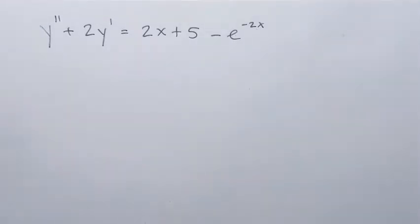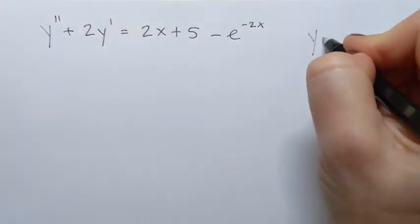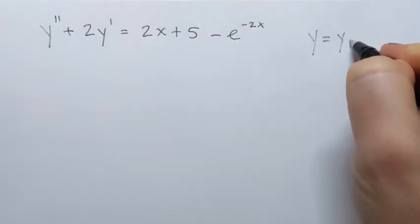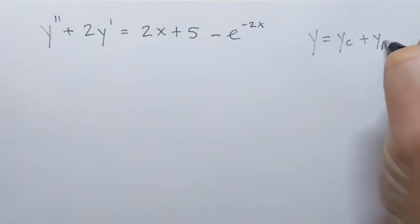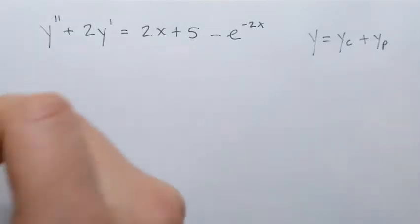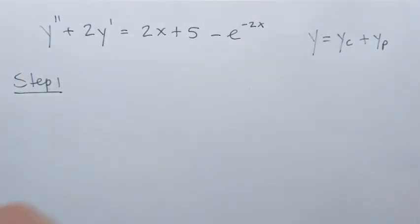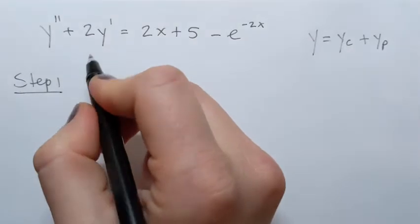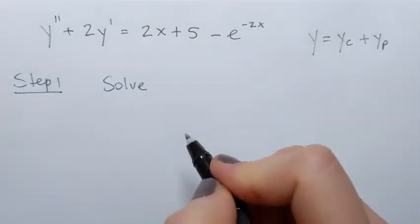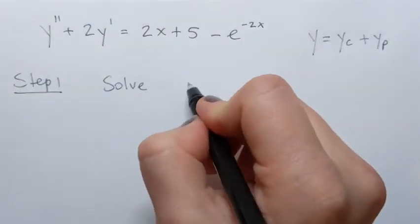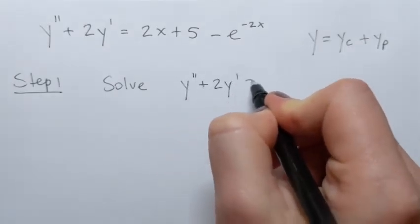The general solution of a non-homogeneous linear equation has the form y equals yc, the complementary function, plus yp, the particular solution. To find yc, the complementary function, we are going to solve the following homogeneous linear differential equation: y double prime plus 2y prime equals 0.